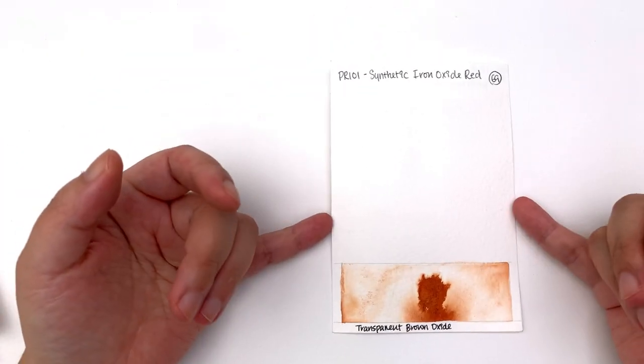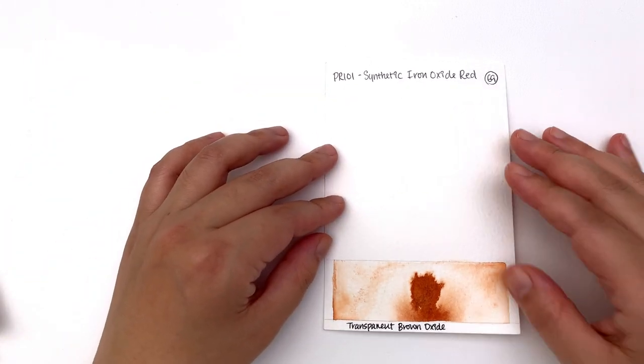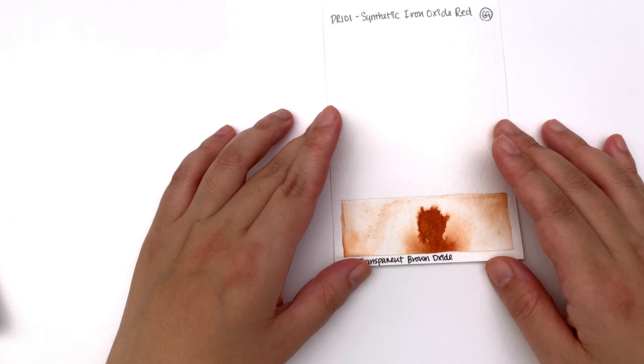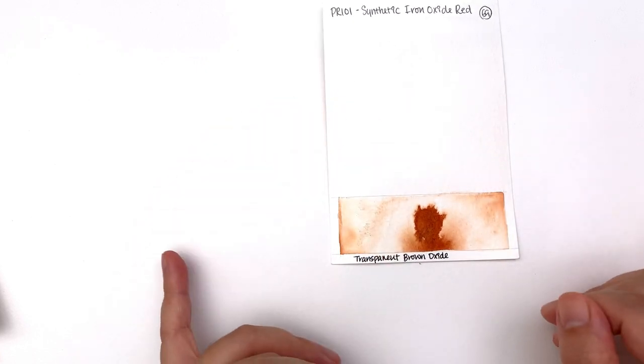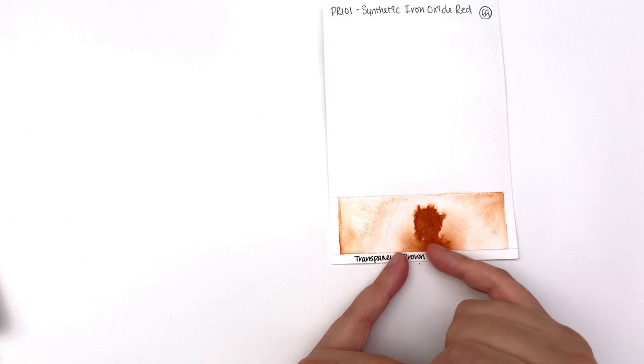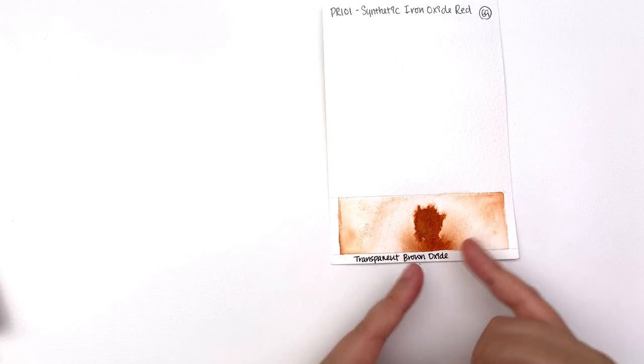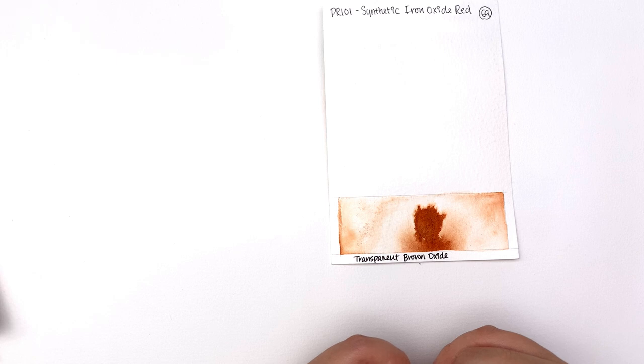It is made with PR101 which again is the synthetic iron oxide red. And in terms of dispersion, it doesn't disperse as much. It's not as crazy as some of the colors we've seen. You would get a tiny little mass tone here and a medium amount or medium intensity of the haloing happening here.